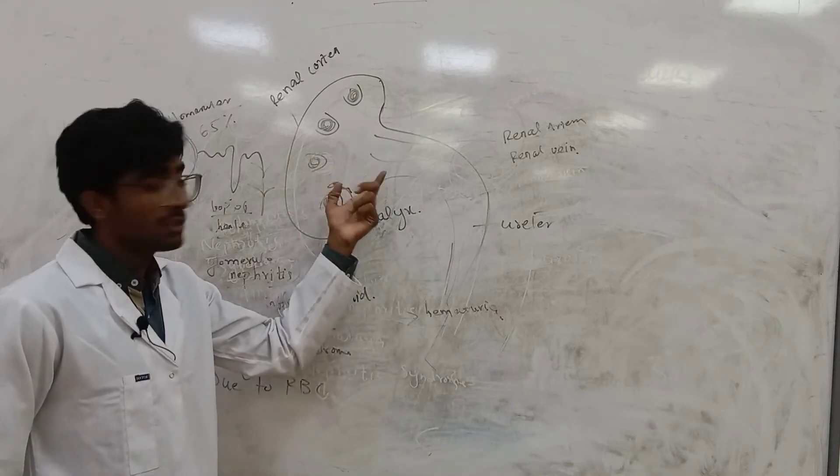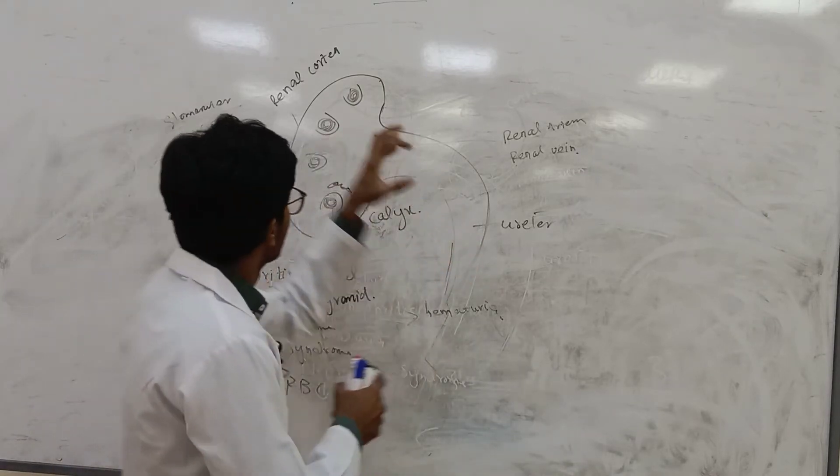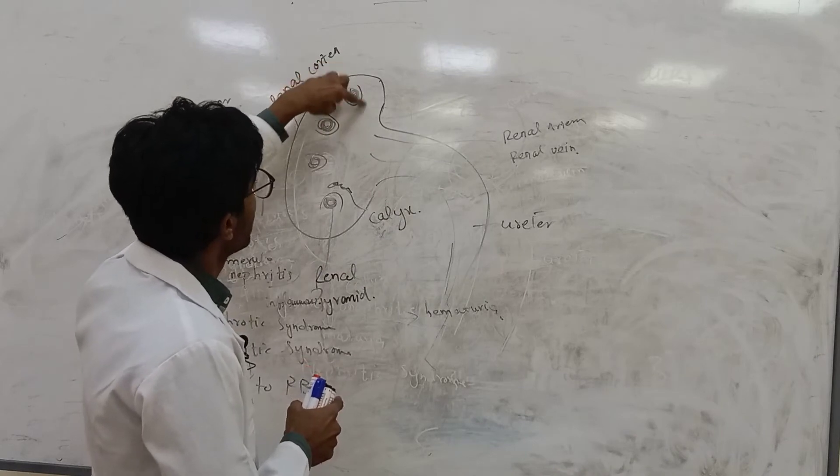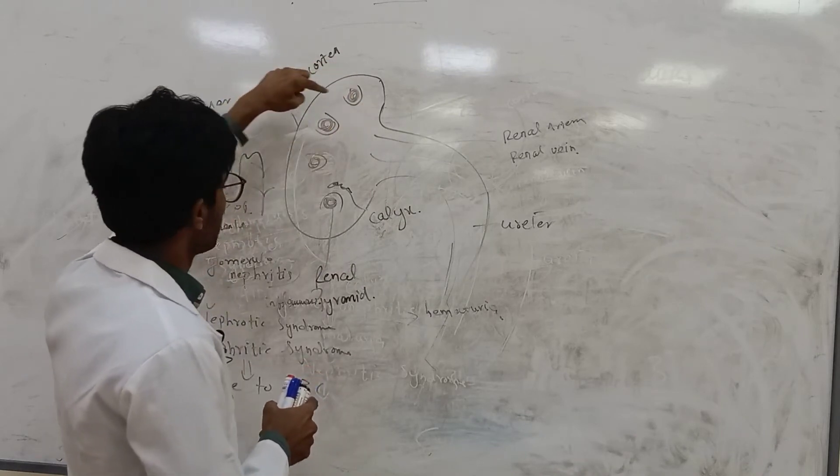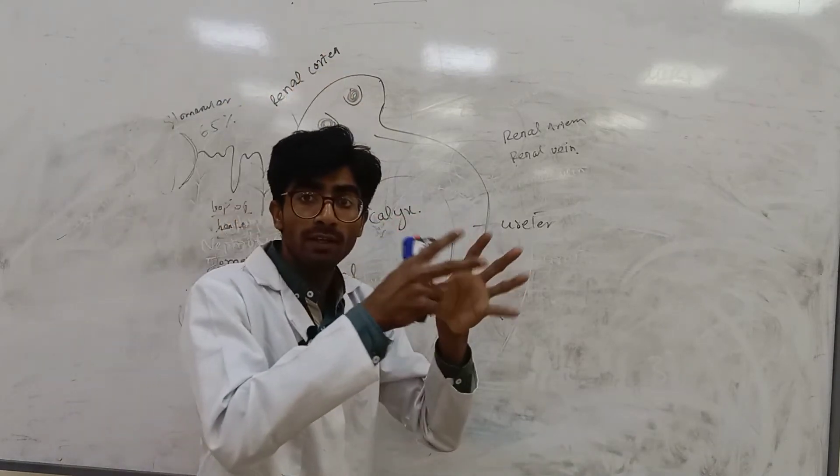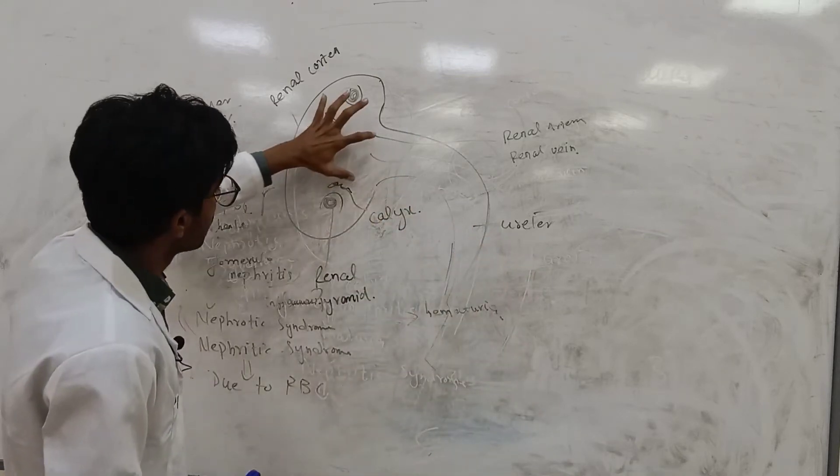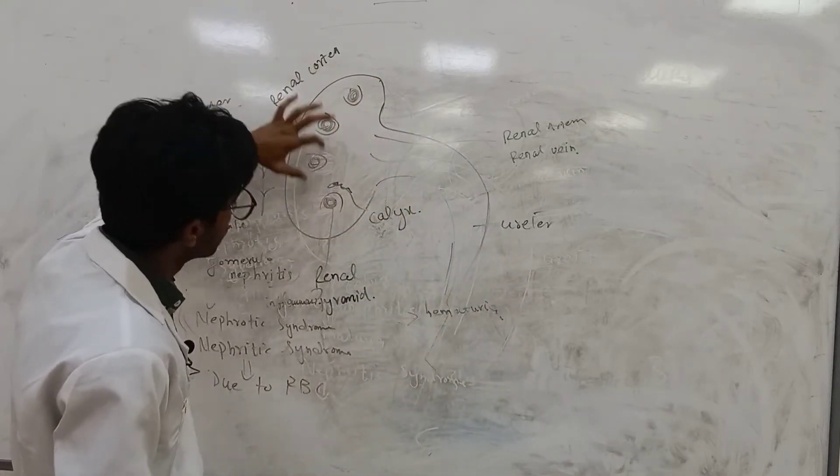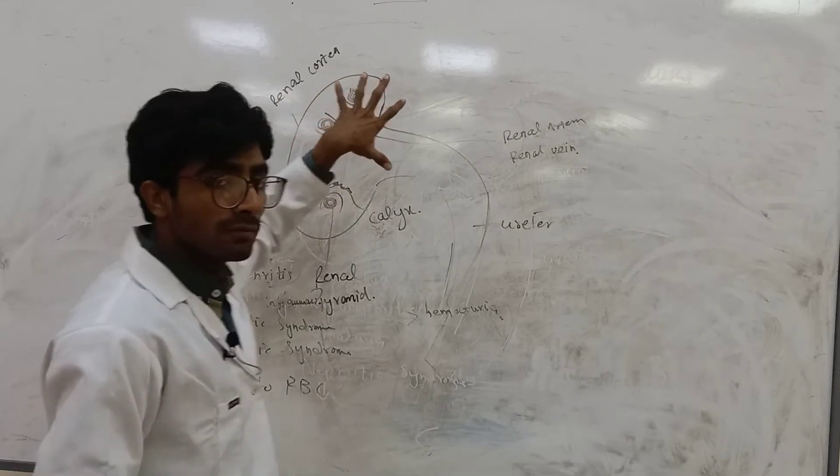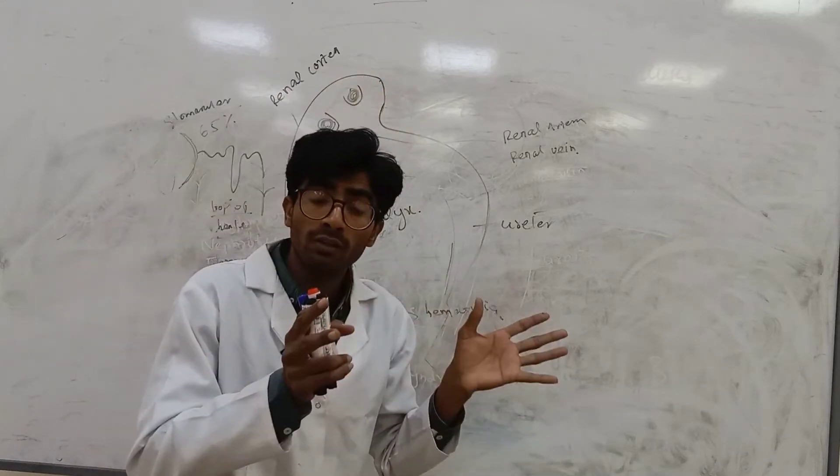And when there is formation of cysts in the kidneys, renal pyramid swells low, the size increases, and sometimes here cysts form.